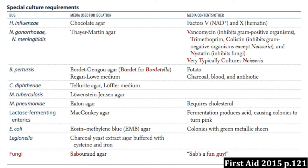Another thing to remember is Pertussis — Bordetella pertussis is grown on Bordet-Gengou media. Diphtheria is grown on medium with potassium tellurite. And most gram-negative rods are plated on MacConkey agar because it contains lactose, so if the bug in question is a lactose fermenter, it turns pink. This allows you to identify unknown bugs a lot more easily.